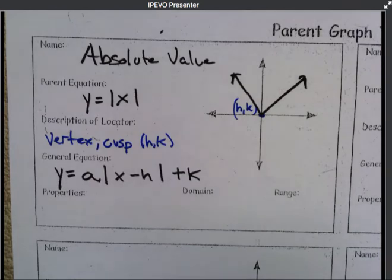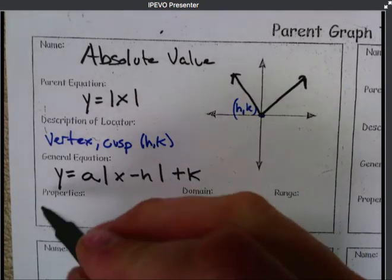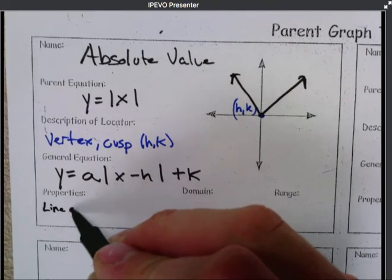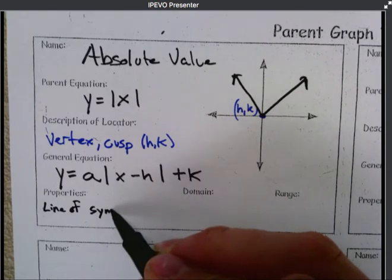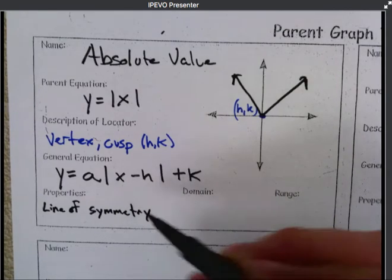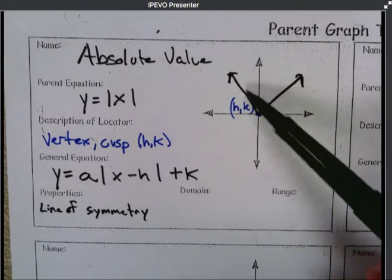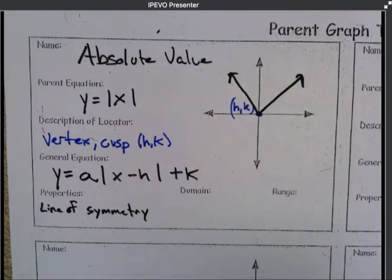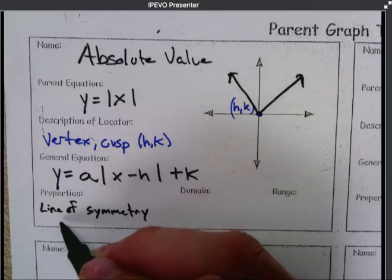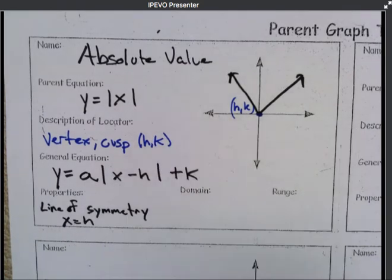The properties are, for this, that there is a line of symmetry. There's a line of symmetry right through that vertex, similar to our parabola, but not the same because it is a straight line coming down and then back up after you hit that cusp. So it's still going to be at x equals h for that line of symmetry.